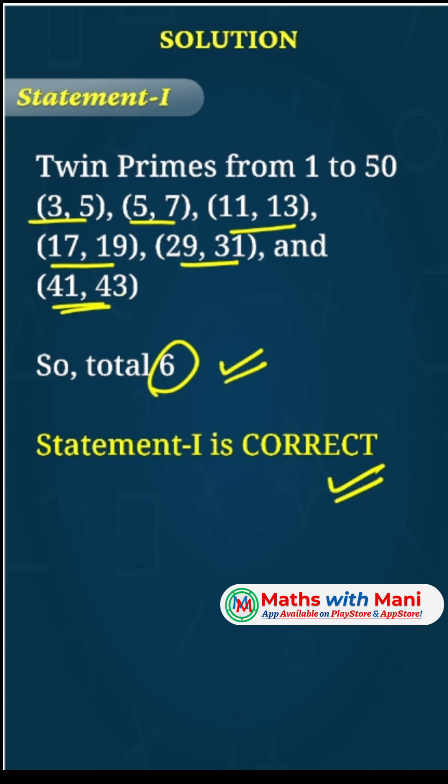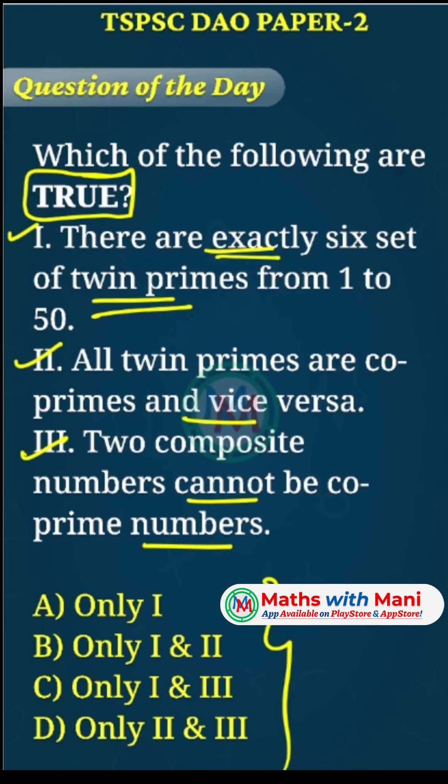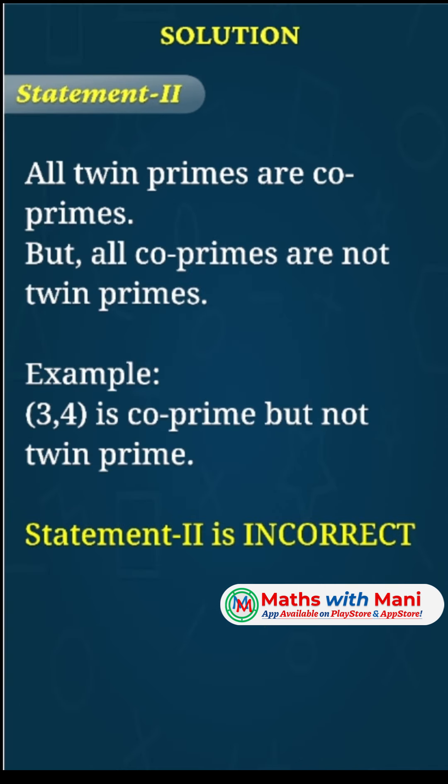Coming to the second statement: all twin primes are co-primes and vice versa. Vice versa means all co-primes are also twin primes. So first let's understand what co-prime means. All twin primes are co-primes, yes, but all co-primes are not twin primes. Let me give you an example.